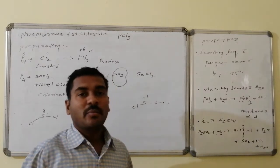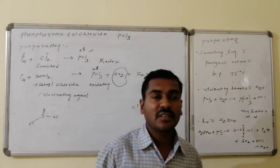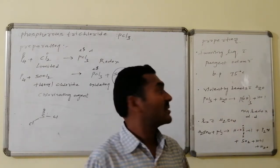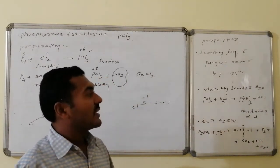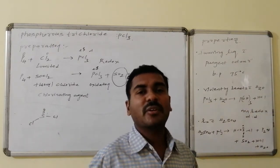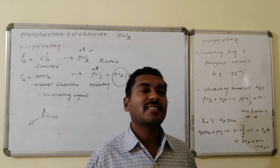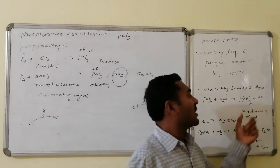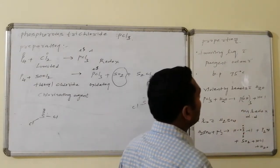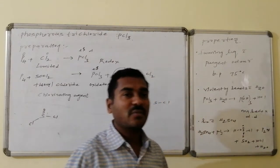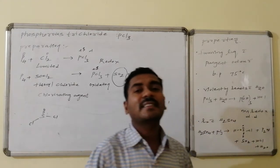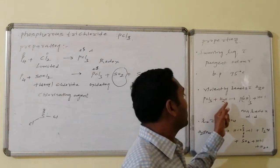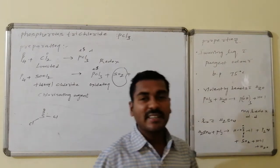Properties: phosphorus trichloride is a fuming liquid with a boiling point of 75°C. It has pungent odor. It violently reacts with water because the P–O bond is stronger than the P–Cl bond, as oxygen is smaller than chlorine. On reaction with water, chlorine atoms are replaced by OH⁻ (the nucleophile from water), forming phosphorous acid, H3PO3. This is a non-redox double displacement reaction — there is no change in oxidation number of any entity, no oxidation, no reduction.